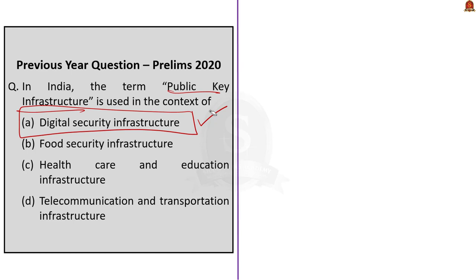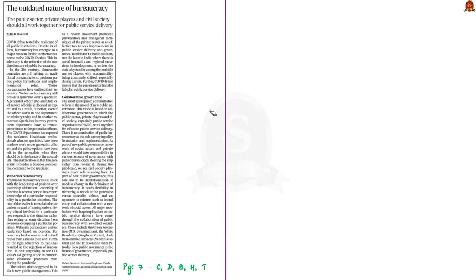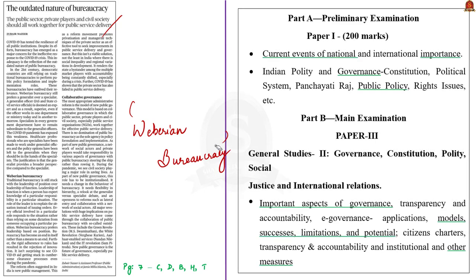With that we have come to the end of previous year question discussion. Now let us move on to the news articles discussion session. Our first news article is an OPED article based on a rare topic — the issues associated with the form of bureaucracy in India. This article talks about the Weberian model of bureaucracy and the issues with it.